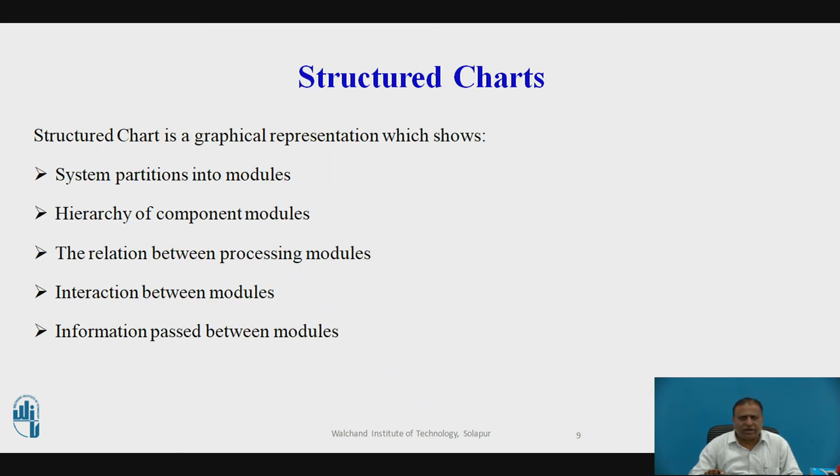The next part is structured charts. It partitions the system into black boxes. A black box system is one where functionality is known to the user without the knowledge of internal design. Structured chart is a graphical representation which shows system partitioning into modules, hierarchy of compound modules, the relation between the processing modules, the interaction between modules, and information passed between modules. It is the hierarchical representation of system which partitions the system into black boxes where functionality is known to the user but inherent details are unknown.